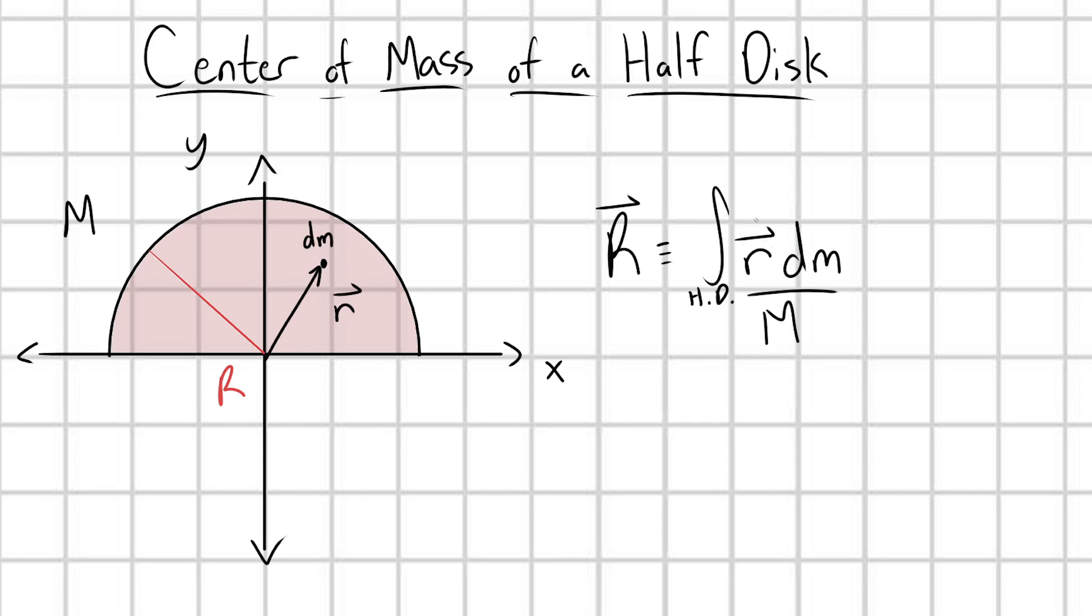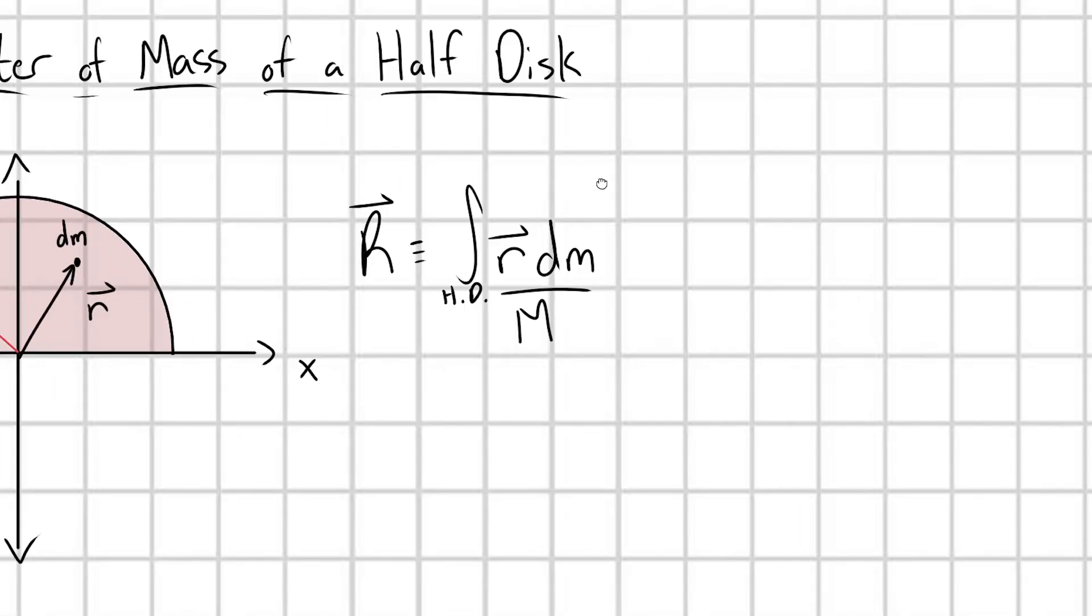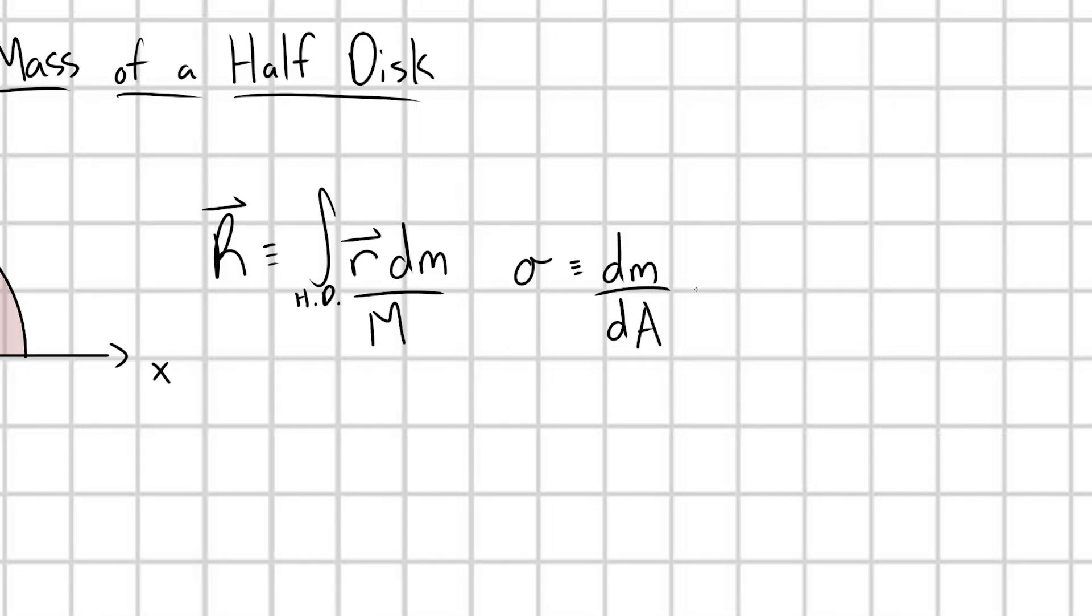So how do we use this integration? Now because my integrand, this r here, is in terms of spatial coordinates, and it's not matching my variable of integration dm, we need to fix that. We need to write dm in terms of some kind of spatial coordinates. So we can do this very easily if we recognize that the area mass density sigma is defined as dm per some infinitesimal area element dA, in which case we can rewrite dm as sigma dA.